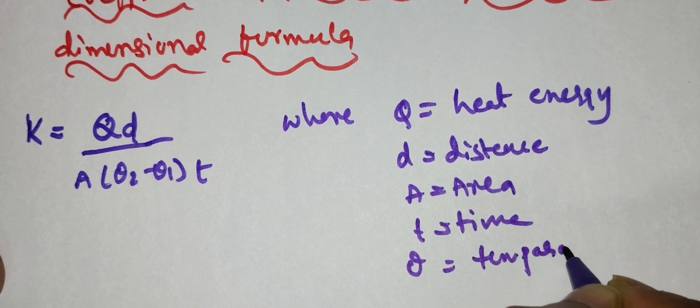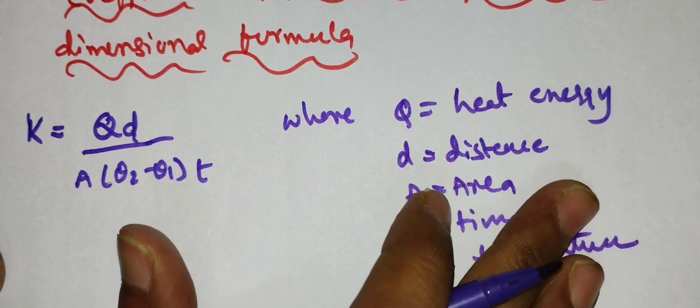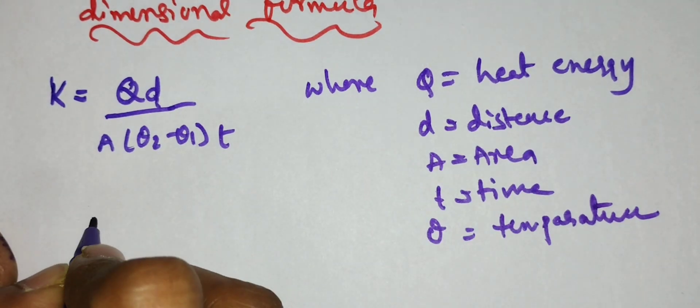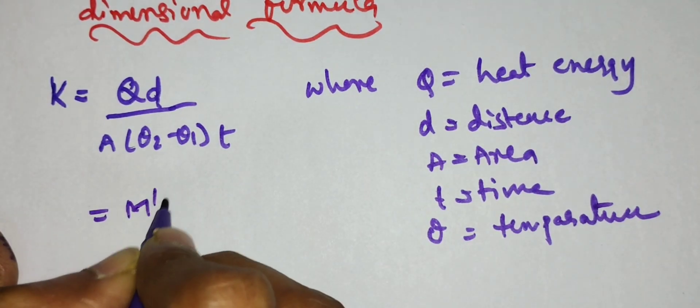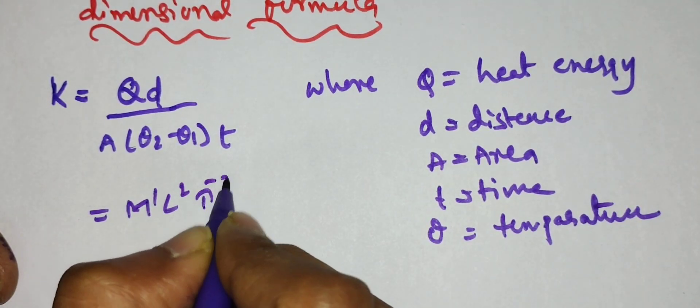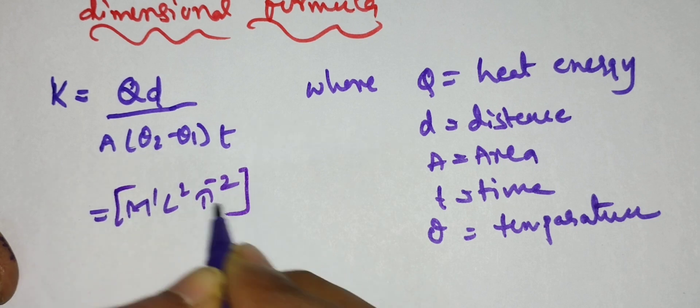So according to the physical quantity we will substitute the dimensions here. That is K is equal to m power 1 l power 2 t power minus 2, that is heat energy dimension formula.